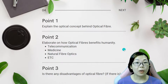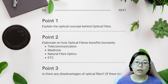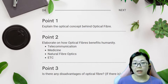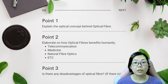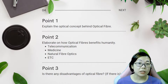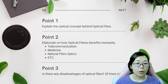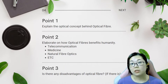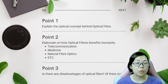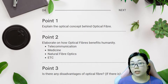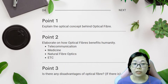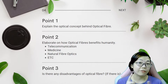Point number one is to explain the optical concept behind optical fiber — which means what part of the light chapter is the concept behind fiber optics. You have to explain a little bit about the optical fiber. Point number two is to elaborate how optical fiber benefits humanity in terms of telecommunications, medicine, medical field, natural fiber optics, or any other applications you can find. You just have to elaborate on one of these particular applications.